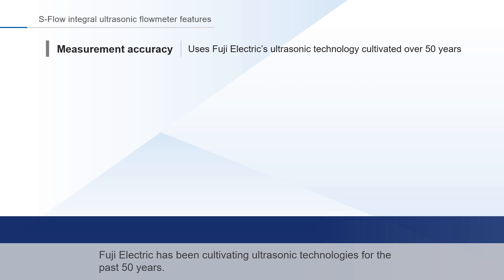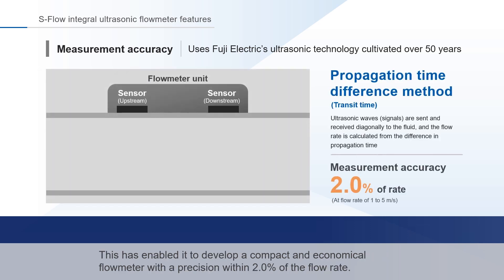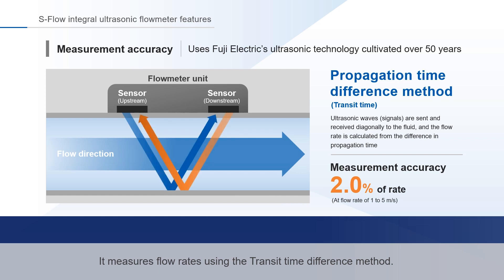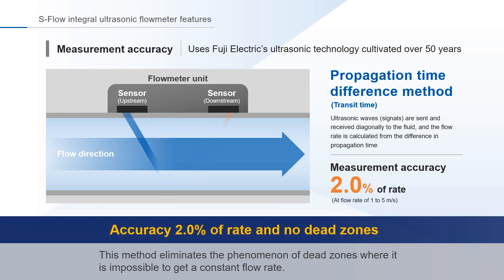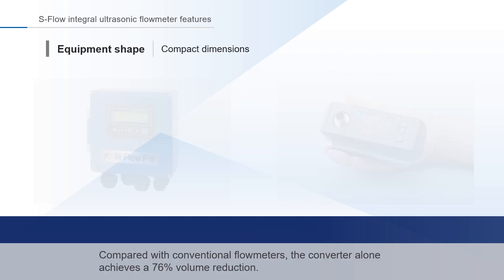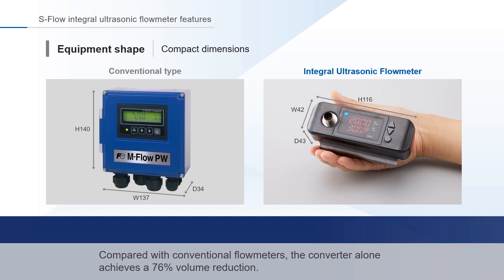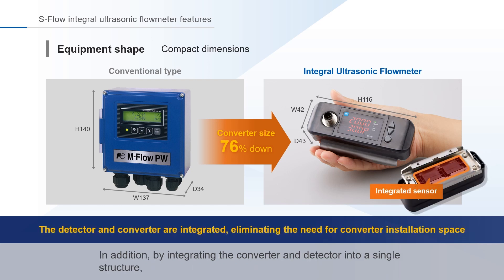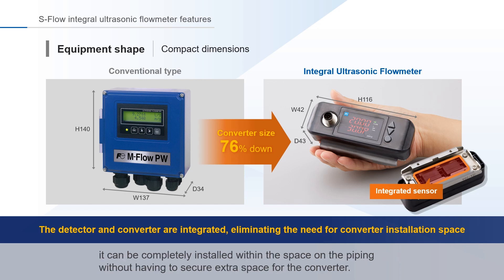Fuji Electric has been cultivating ultrasonic technologies for the past 50 years. This has enabled the development of a compact and economical flow meter with a precision within 2.0% of the flow rate. It measures flow rates using the transit time difference method, which eliminates dead zones where it is impossible to get a constant flow rate, making it possible to measure from zero. Compared with conventional flow meters, the converter alone achieves a 76% volume reduction. By integrating the converter and detector into a single structure, it can be completely installed within the space on the piping without having to secure extra space for the converter.